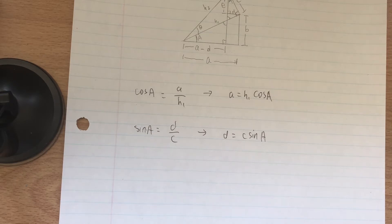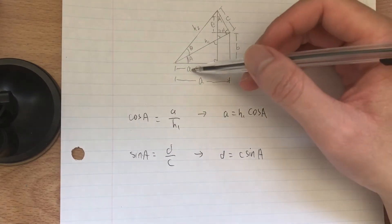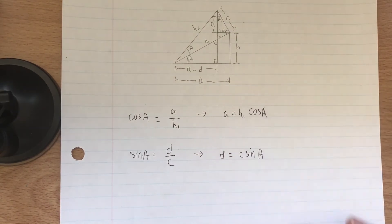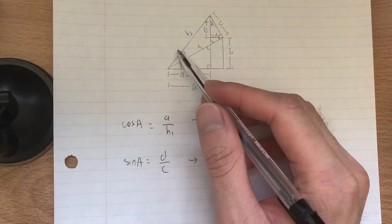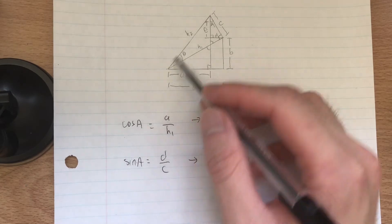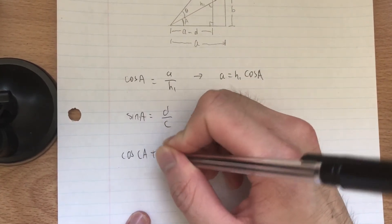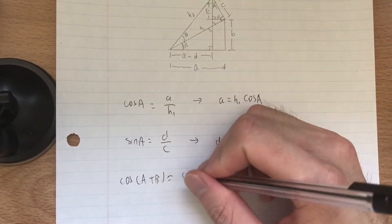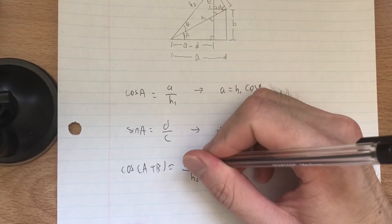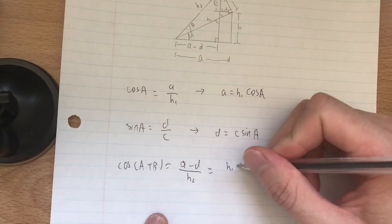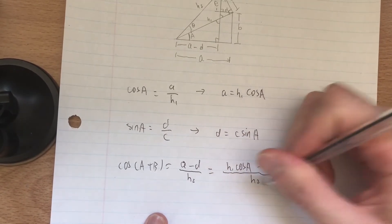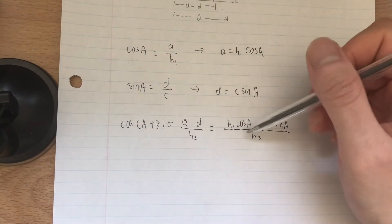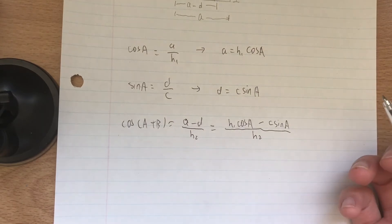Now we have A and D, so we can write a minus D. Cosine(A+B) is adjacent over hypotenuse, so: cosine(A+B) equals (a minus D) over H2, which expands to (H1 cosine A minus C sine A) over H2.